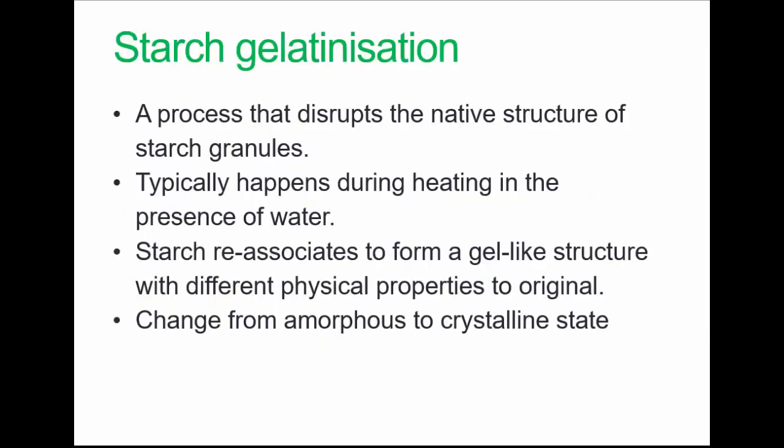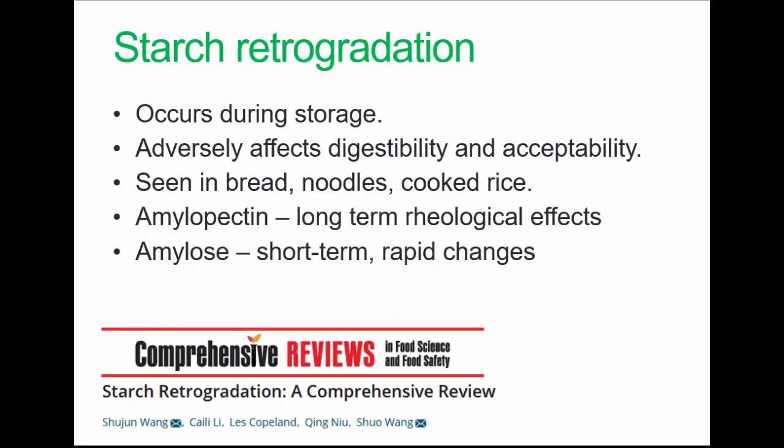This brings us to starch gelatinization and retrogradation. Starch gelatinization is an important factor in food production involving foods that contain significant amounts of starch. It happens through heating — we'll look at the various consequences as we go through the lecture. Starch retrogradation is a process in which disaggregated amylose and amylopectin chains in the gelatinized starch paste reassociate to form more ordered structures. This happens during storage.